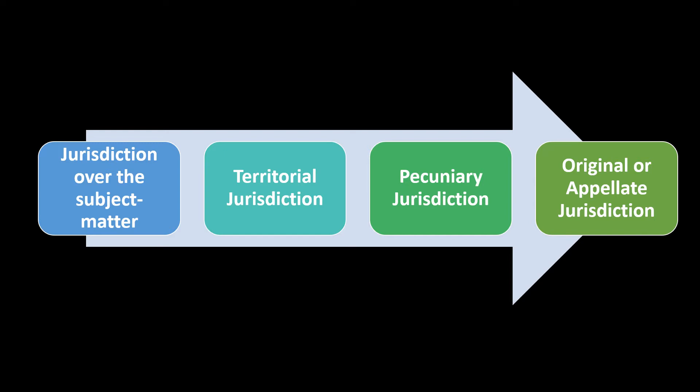In a district court you can find only original cases, whereas in the Supreme Court you may find appeals. With respect to patent law, the IPAB — or Intellectual Property Appellate Board — undertakes only appeals, and we can say that IPAB has appellate jurisdiction.